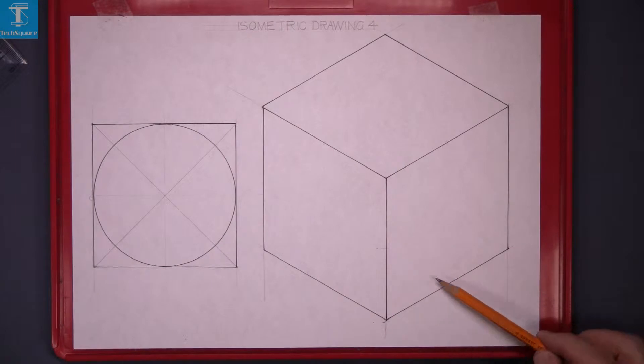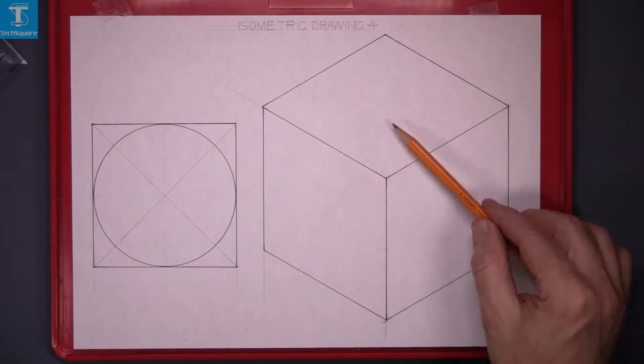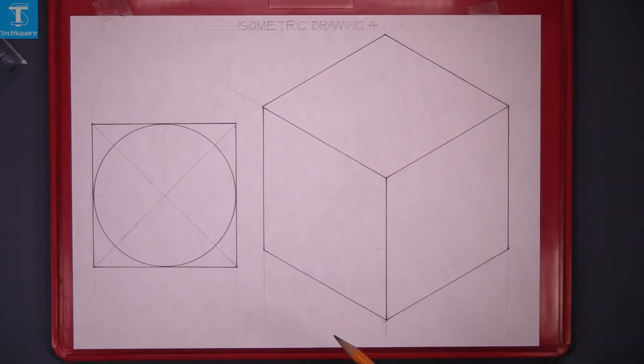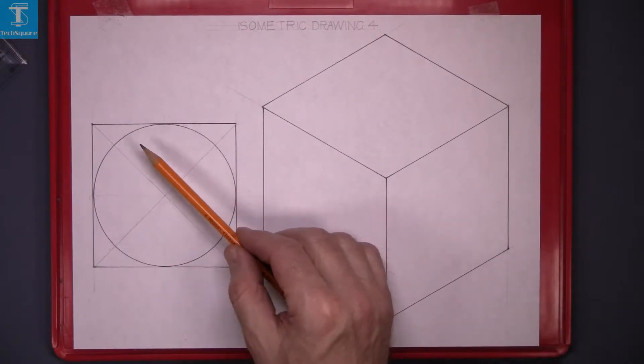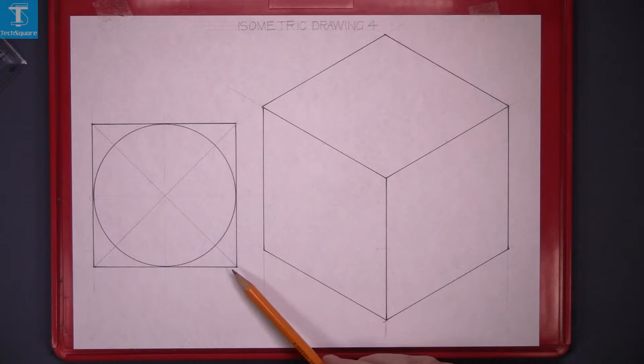In isometric, there is no perfect circle, they are all ovals, so you have to draw the perfect circle on a separate diagram and the square around it.